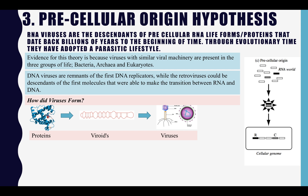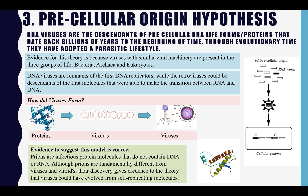But how did viruses form? It is suggested that viruses evolved from a protein, which then evolved into a viroid, which then evolved into a virus. A viroid is a molecule of RNA that is not classified as a virus because they lack a protein coat. However, they share characteristics that are common to a virus. The evidence that this model is correct comes from a molecule known as a prion. This is an infectious protein molecule that does not contain DNA or RNA. Although prions are fundamentally different to viruses and viroids, this discovery suggested that viruses could have evolved from self-replicating molecules.